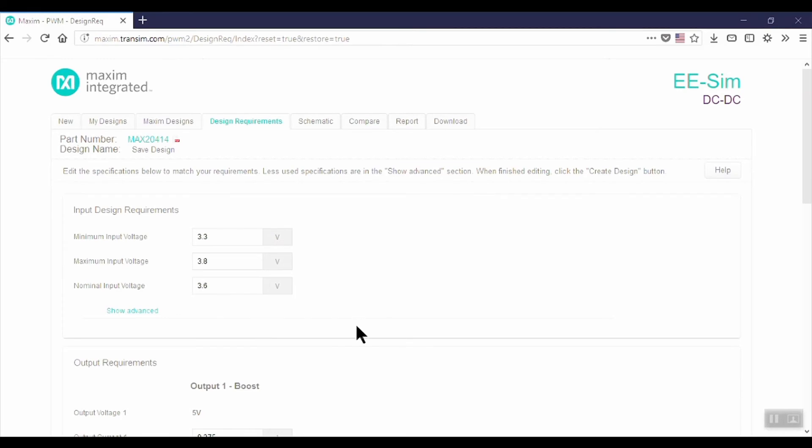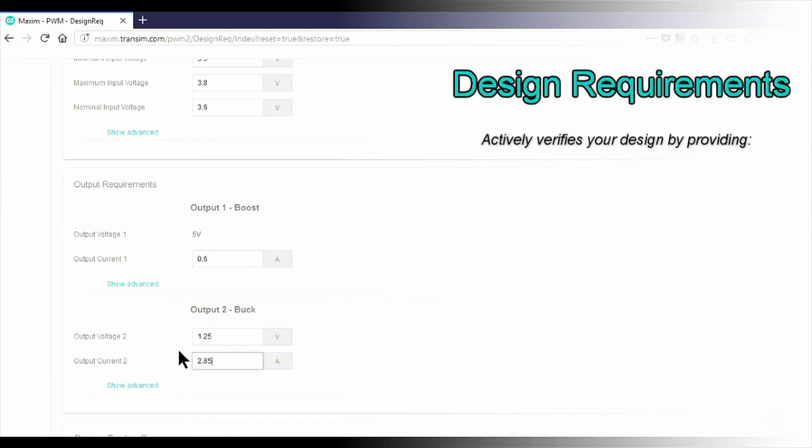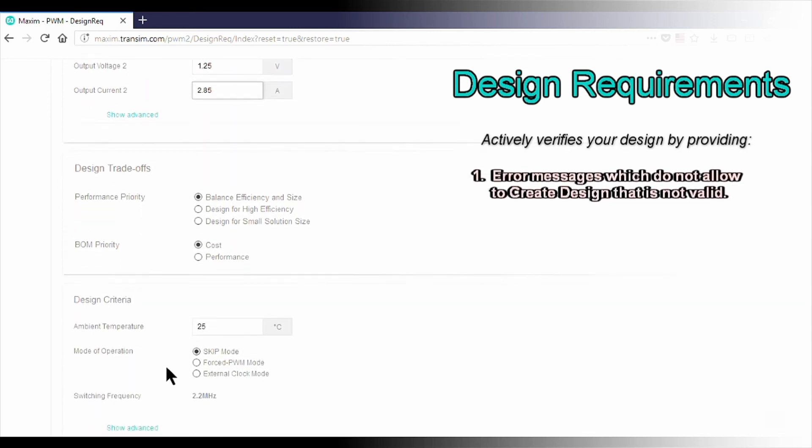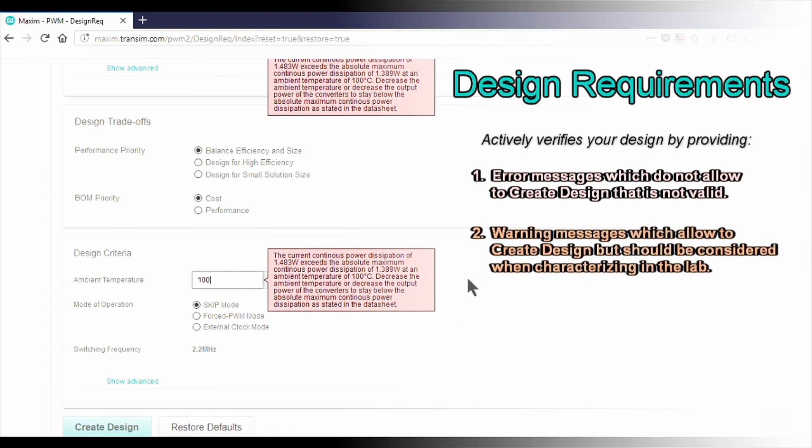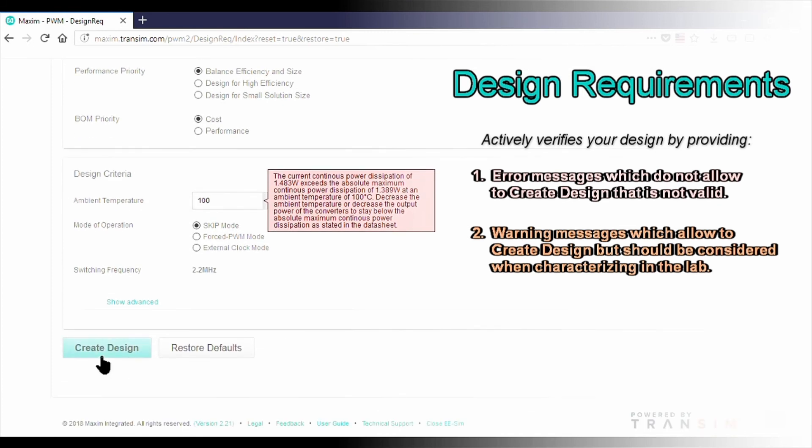The design requirements tab actively verifies your input design requirements and does not let you create a design if any guideline in the datasheet is not met. eSIM provides error messages when the current state of the design requirements cannot yield a working design with the chosen part. Warning messages also appear as a cautionary tale for the designer to take note when verifying the hardware in the lab.